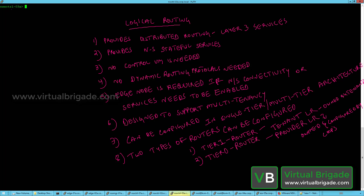There is no dynamic routing protocol needed between the logical routers. In NSX-T the NSX-Admin can create two different types of logical routers: Tier0 logical routers and Tier1 logical routers, wherein the Tier1 logical routers will always connect to the Tier0 logical routers. No dynamic routing protocol is needed between the Tier1 and Tier0 logical routers.